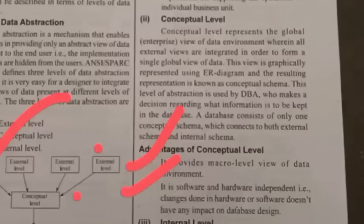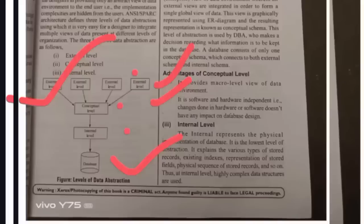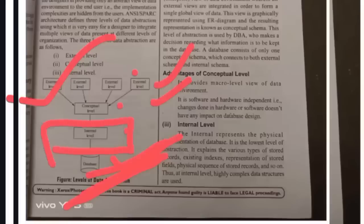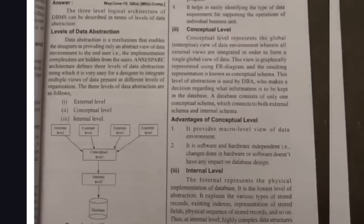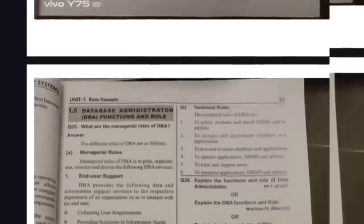The Internal Level represents the physical representation of data. This is the lowest level where everything is stored. No person can directly view the internal level; everyone interacts through the external level only. Data is stored in physical sequences, stored records, and so on. This diagram is important — you should draw and explain each level for eight marks, covering two pages.